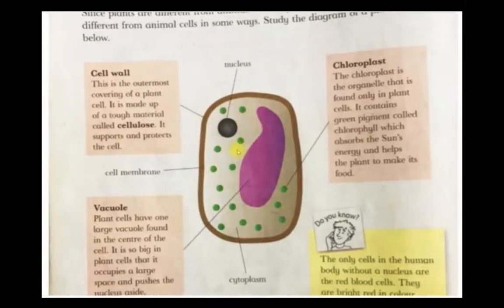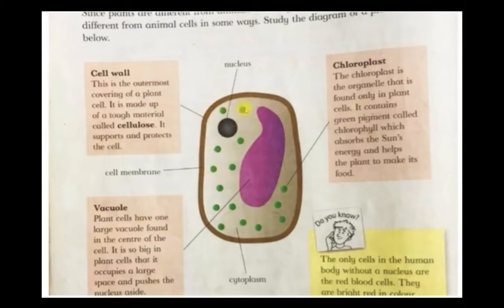In the previous picture we saw the cell membrane. In the plant cell we also have a cell membrane, but outside the cell membrane, as you can see, there is a cell wall. This cell wall is the outermost covering of a plant cell. It is made up of cellulose, which is a very tough material, and it provides support and protects the cell.